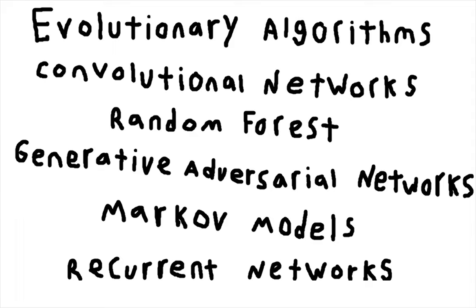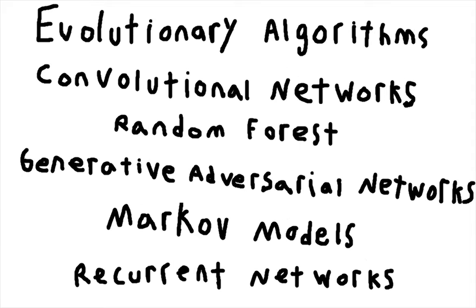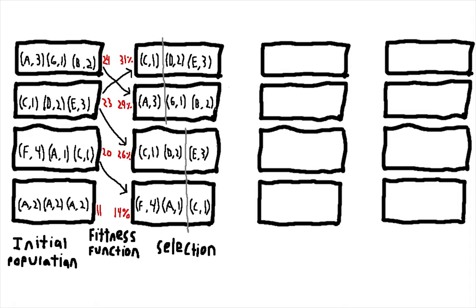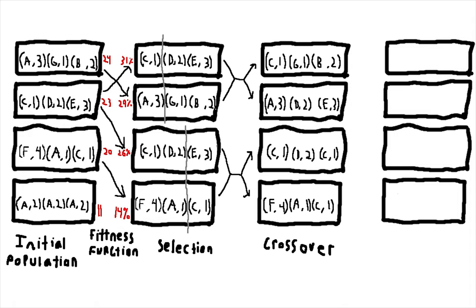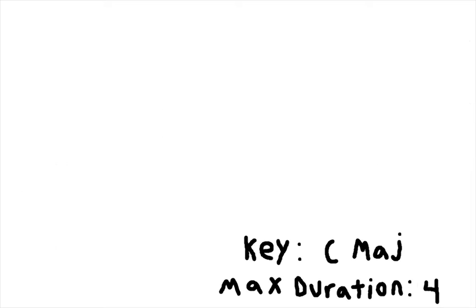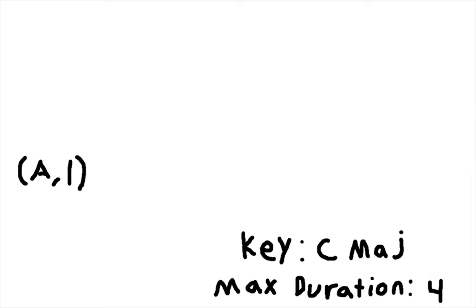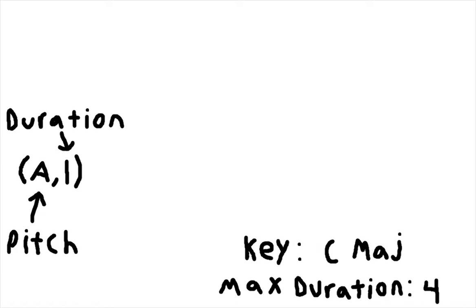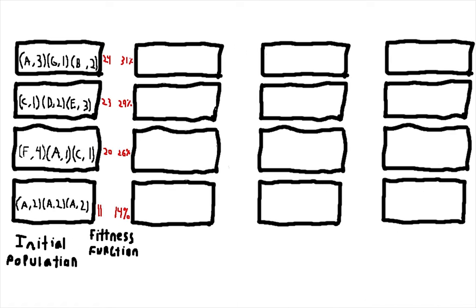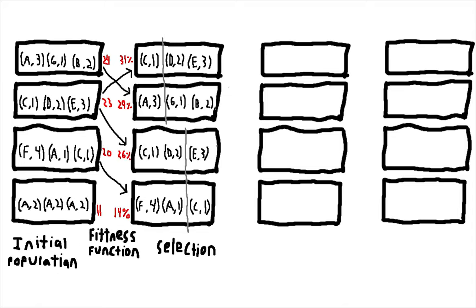There are many methods for generating music with AI and in this video, we'll only be covering a few. First is evolution. This method uses a genetic algorithm to generate compositions by restricting the allowed notes to a particular key and range of durations. The notes are represented as tuples containing the pitch and duration and the songs are then represented as strings of these tuples with the initial population containing many randomly generated compositions.